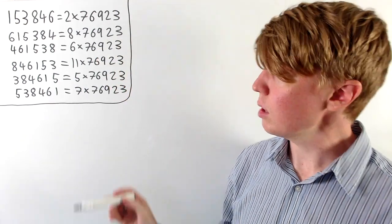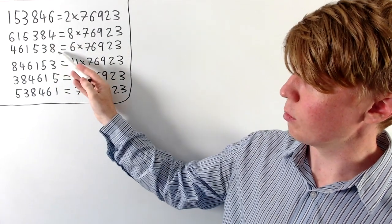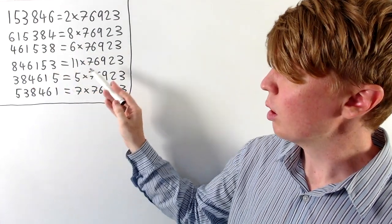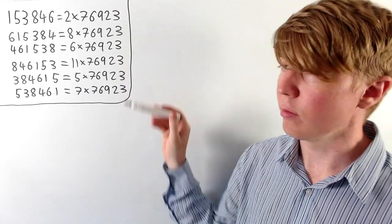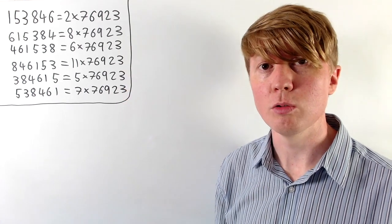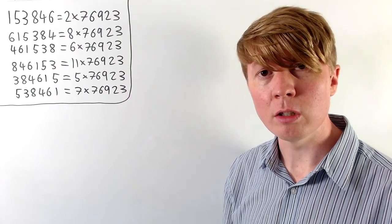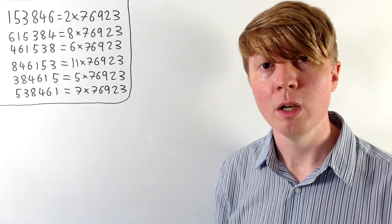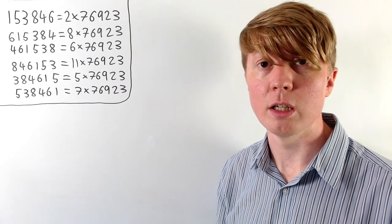And if we do the same thing over and over — put the 4 at the front, then put the 8 at the front, and so on — we always get a multiple of 76923. So the purpose of this video is to explore where this comes from and how someone may have discovered this kind of result.